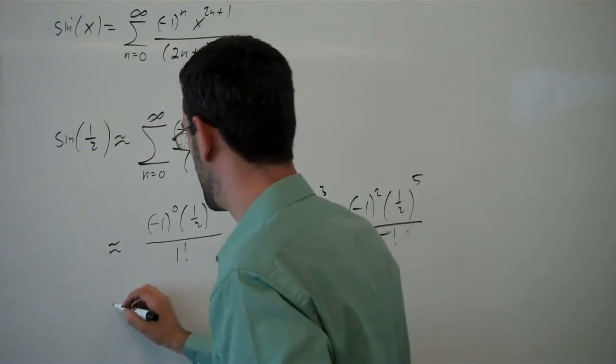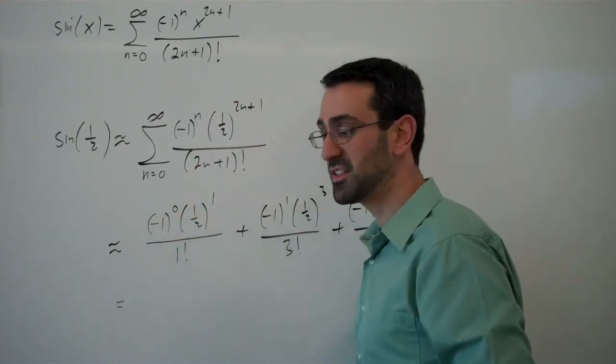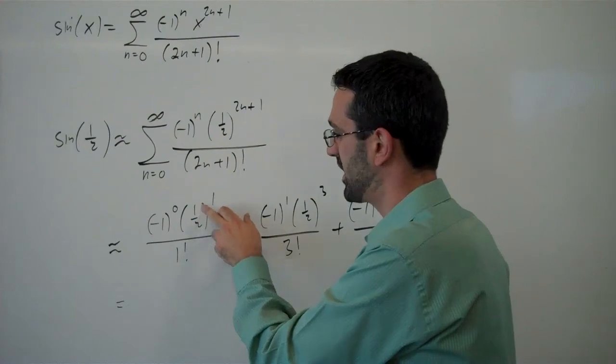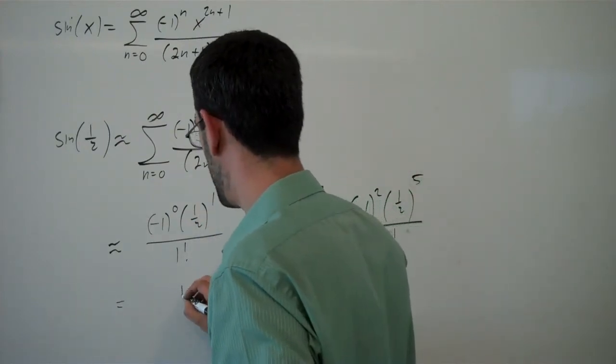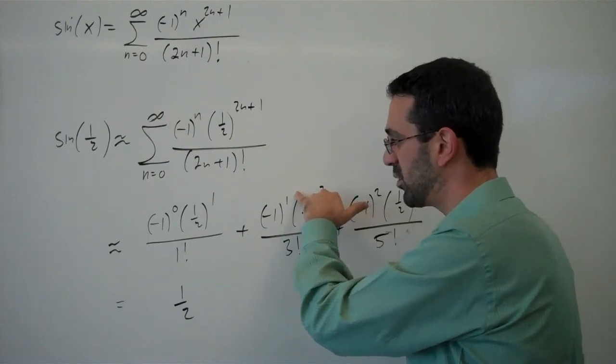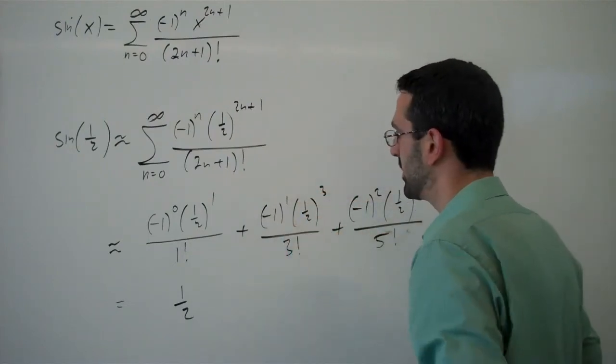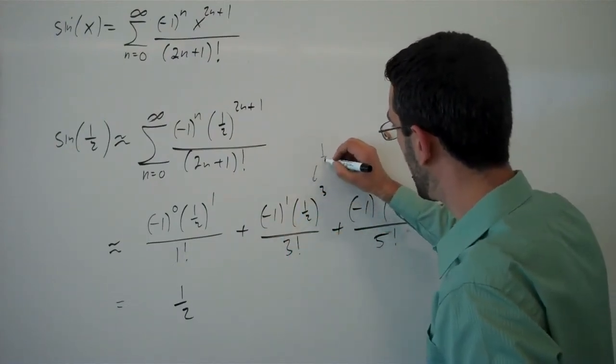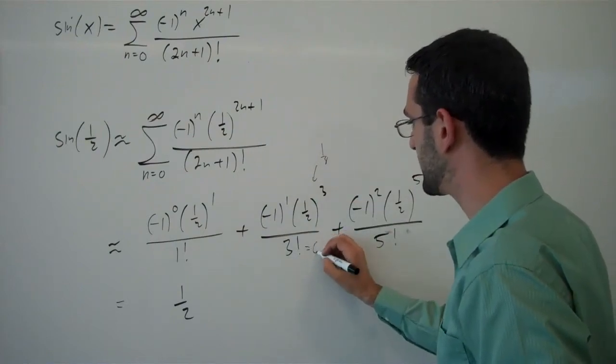And so let's evaluate that. So negative 1 to the 0 is positive 1 times one half over 1 is one half. Here I've got negative 1 to the 1, that will be negative. This will be one eighth. 3 factorial is 6.